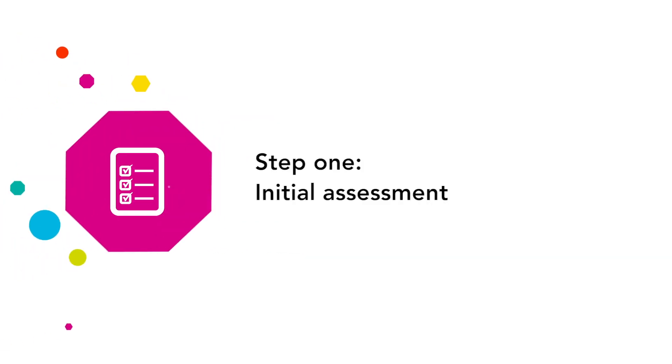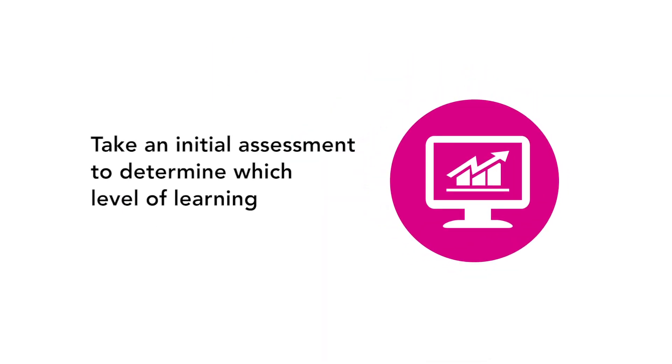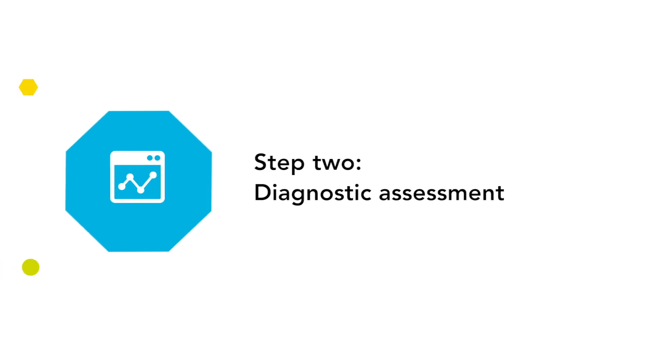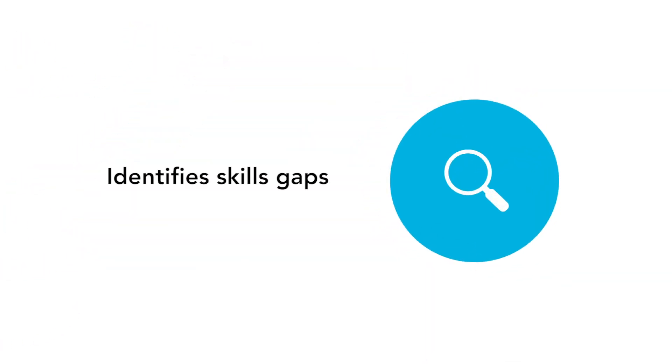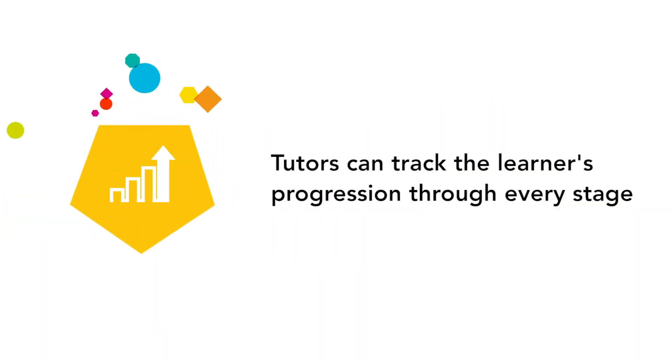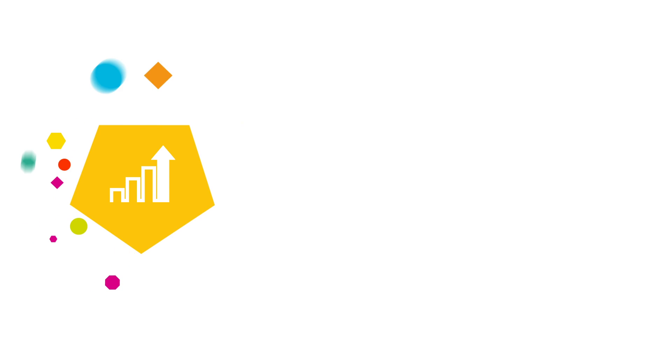Step 1: Initial Assessment. The learners take an initial assessment to determine which level of learning they should start at. The tutor is informed of this before moving on to Step 2: Diagnostic Assessment. The diagnostic assessment identifies the skill gaps after the learning level has been selected. Teachers can track the learner's progression through every stage.